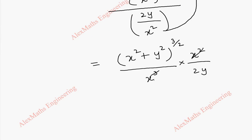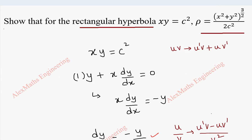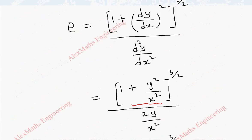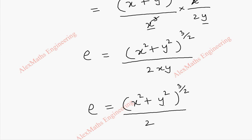After cancelling we are left with only x. So we have the radius of curvature rho equal to x square plus y square whole power 3 by 2, whole divided by 2xy. But in the question they have given xy equal to c square. So replacing xy in the denominator, the radius of curvature rho equals x square plus y square whole power 3 by 2, whole divided by 2c square. So we have proved the given result.